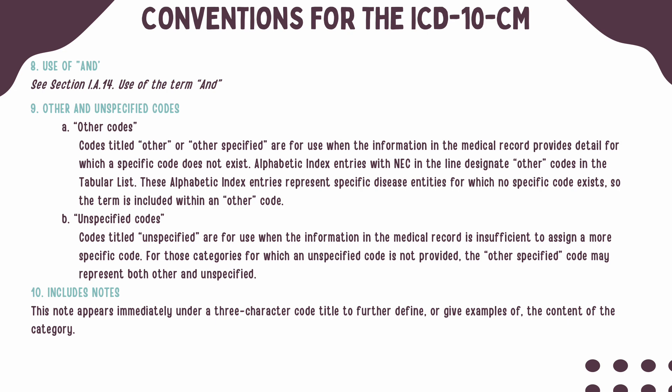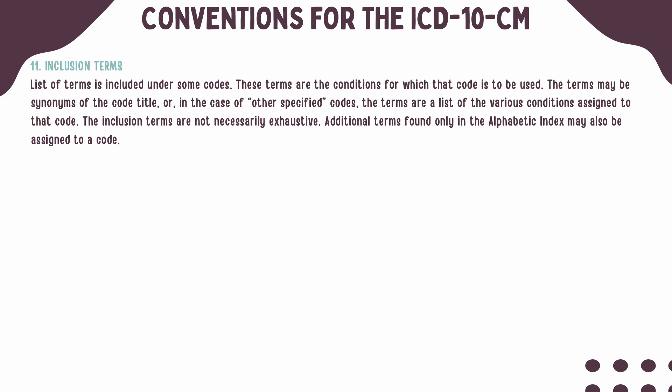Includes notes will indicate examples of conditions that will be found within the category. These will be found directly under a three-character code, also known as your category. Some ICD-10-CM codes have a list of terms or conditions that could be included within that code. These lists are not all-inclusive, and they may not include every condition that will be included within that code.